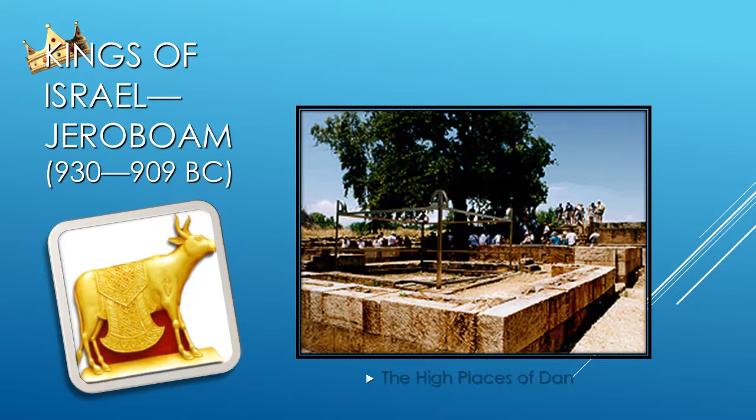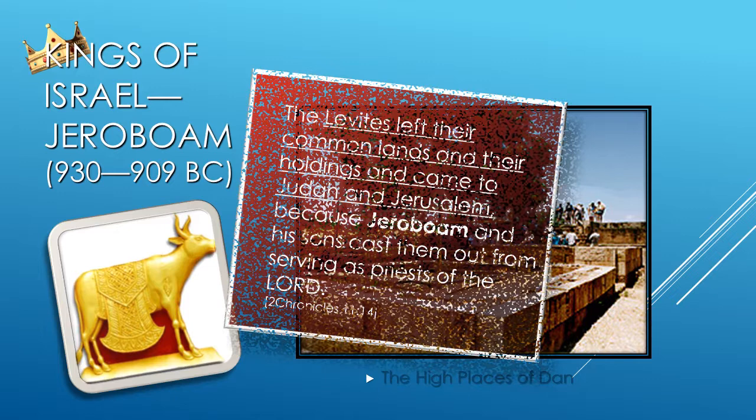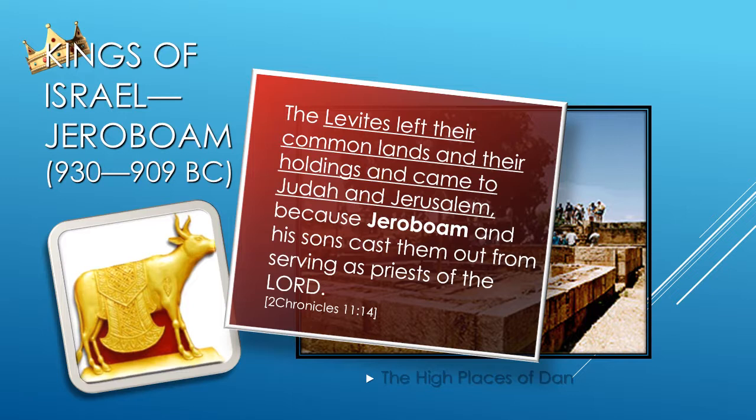Jeroboam chose the exact same spot where early Danites had erected their pagan high places centuries before. And since Baal was frequently depicted as a bull or having bull attributes, Jeroboam's compromise of representing Yahweh as a bull calf and placing it in exactly the same high place was probably designed to appeal to the broadest possible audience. The Levites left their common lands and came to Judah and Jerusalem because Jeroboam and his sons cast them out from serving as priests of the Lord, and those who had set their hearts to seek the Lord God of Israel came after them from all the tribes of Israel to Jerusalem.